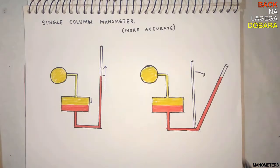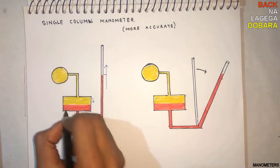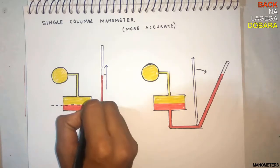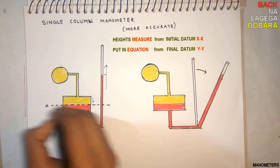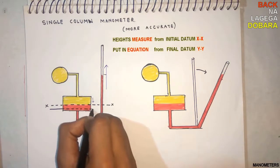Initially the heavy liquid will be in the same level. Let's consider the datum, the XX level. And after pressure is applied, it goes up to the final datum.